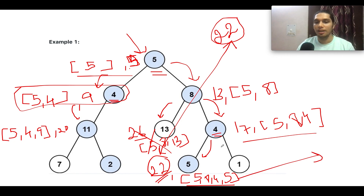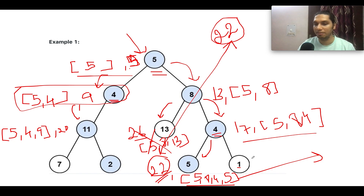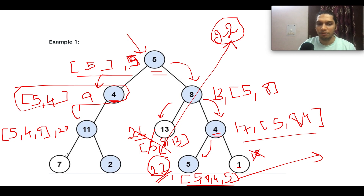For the other child node with value 1: 17 plus 1 gives 18, which is not equal to 22, so we discard this branch.